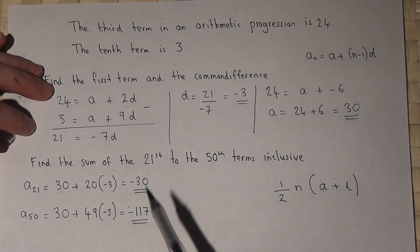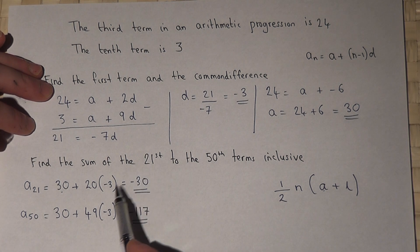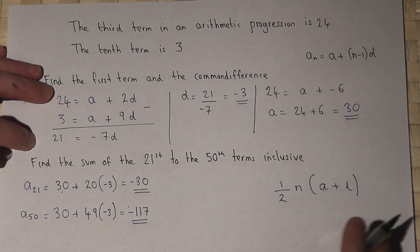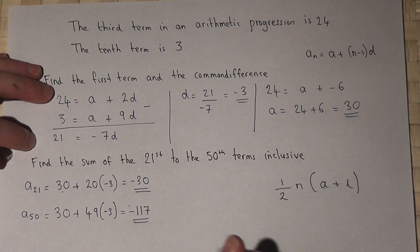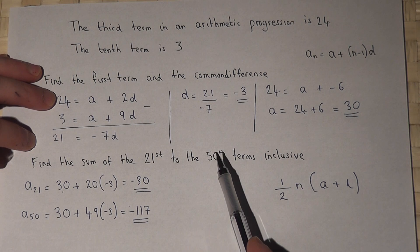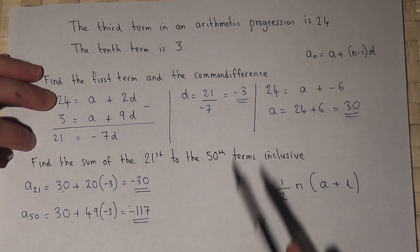To therefore add together, or find the sum of, the 21st to the 50th terms inclusive, we use the following formula. So between the 21st and the 50th term, there are obviously 30 terms in the sequence.